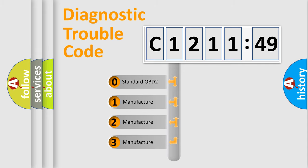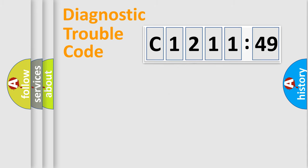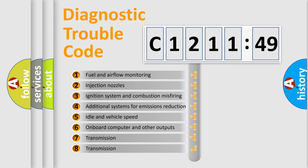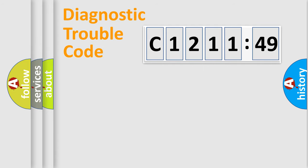This distribution is defined in the first character code. If the second character is expressed as zero, it is a standardized error. In the case of numbers 1, 2, or 3, it is a manufacturer-specific error. The third character specifies a subset of errors. The distribution shown is valid only for the standardized DTC code. Only the last two characters define the specific fault of the group.